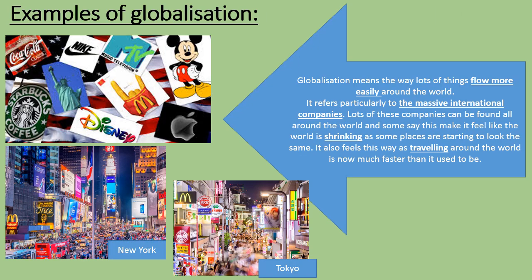Another key aspect of globalisation is massive international companies. Globalisation generally means the way things — news, products, people, languages, cultures — flow more easily around the world. When we talk about globalisation we're often talking about huge companies that operate in lots of different countries. These companies give countries something in common with each other. You might go somewhere and not know the language or culture, but you'd know they have a McDonald's. Some say this makes it feel like the world is shrinking as places start to look the same.